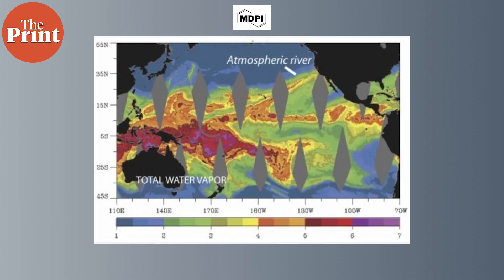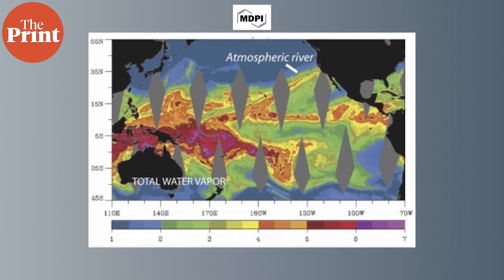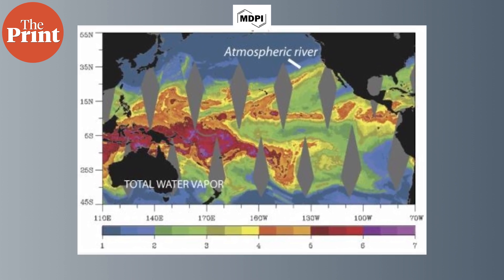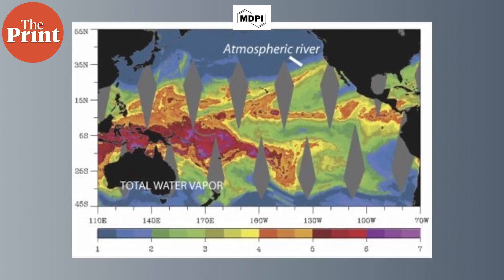However, in California, a study in 2011 estimated that at least 20 to 50 percent of the state's entire water supply comes from atmospheric river systems.